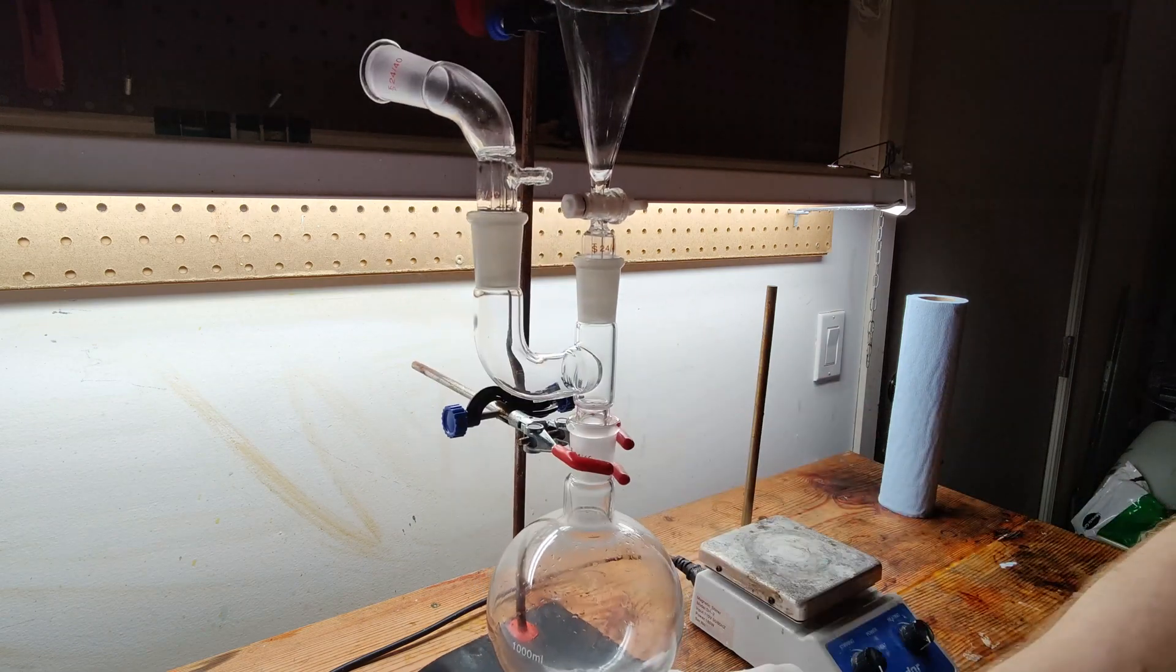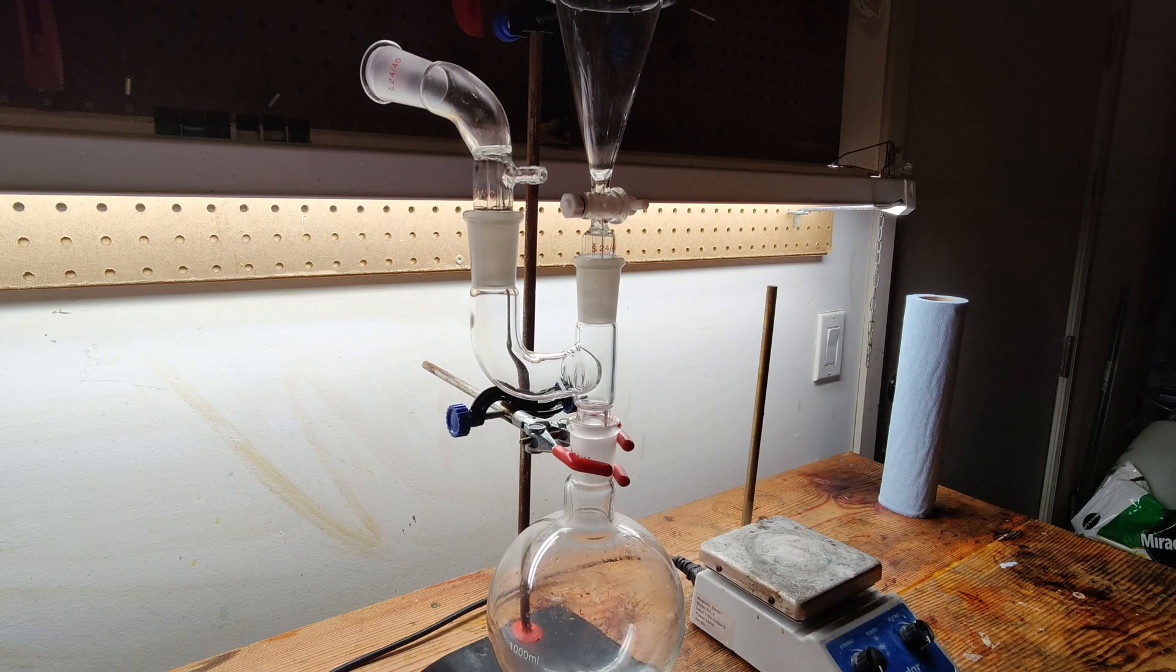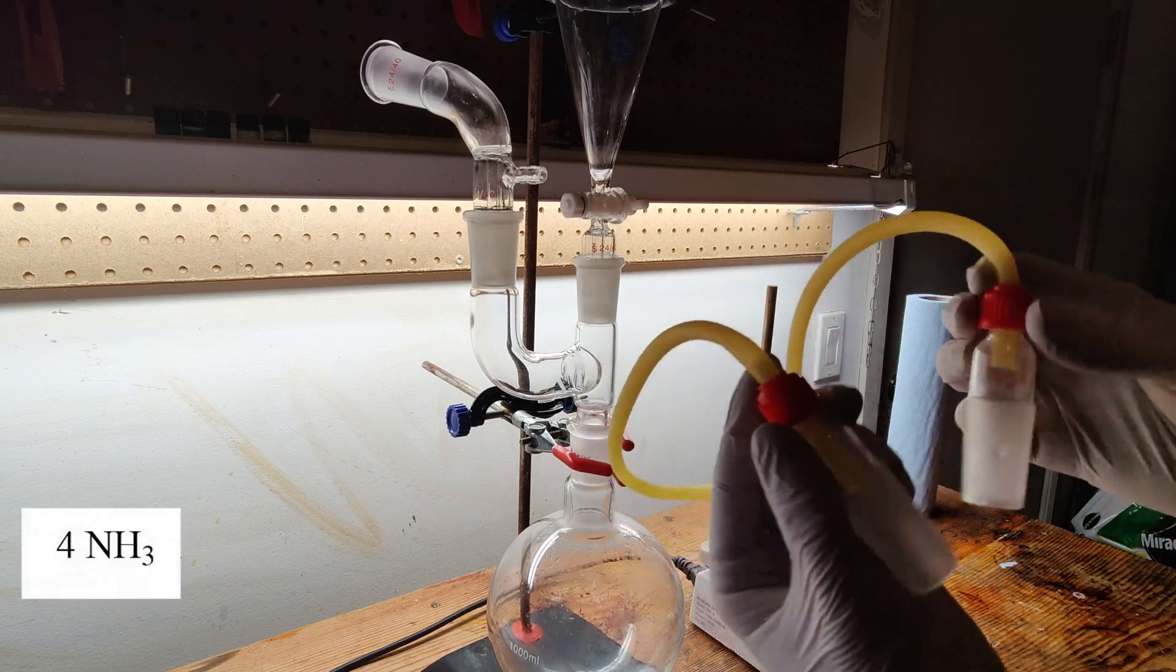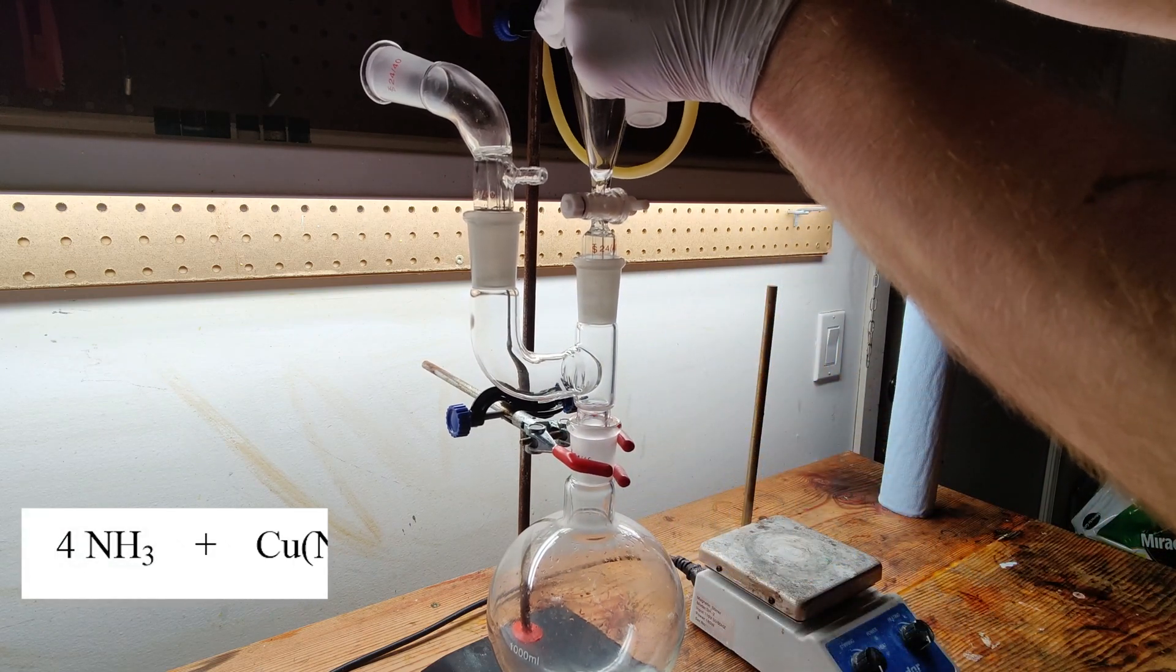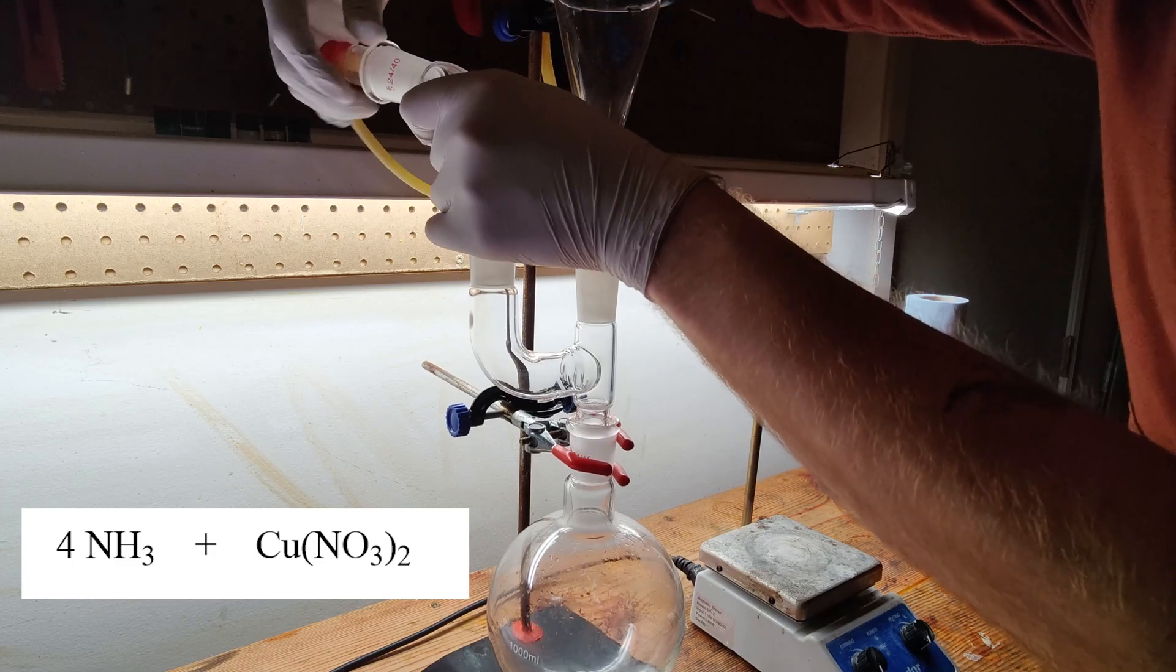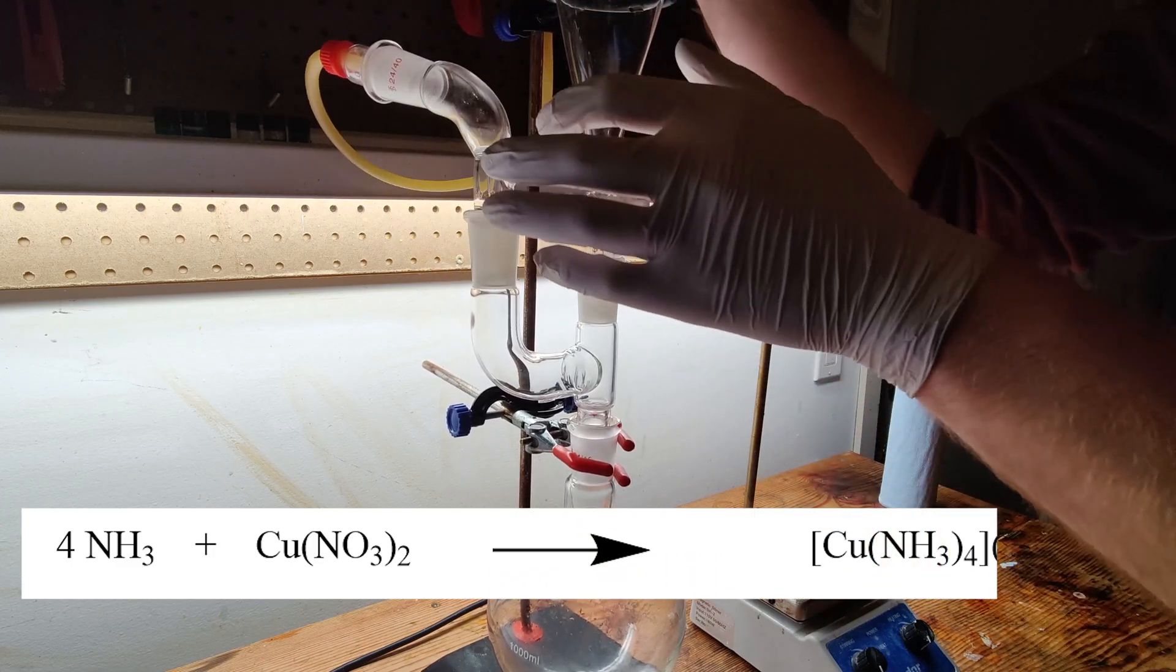I'll be breaking the experiment down into three main steps. First, I will need to create a concentrated ammonia solution. Then I will need to create concentrated copper nitrate solution. Finally, I will combine the two of them in order to form the TACN.